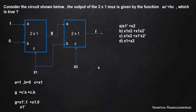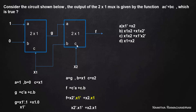Now we derive the expression for f. Input a of the second multiplexer is connected with g, input b is connected with x1, and the selection line c is connected with x2. The expression for f is: when c equals 0 it selects a, so x2-complement times g which is x1-complement; when c equals 1 it selects b, so plus x2 times x1. Therefore f equals x2-complement·x1-complement plus x2·x1, and option C is the correct answer.